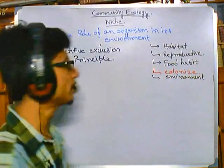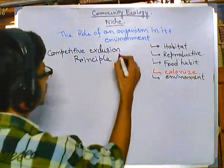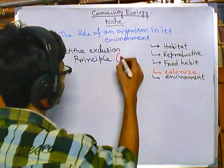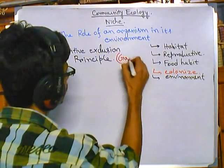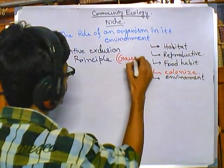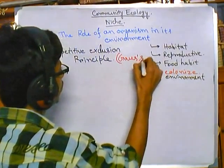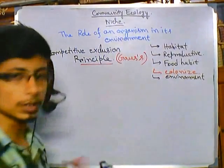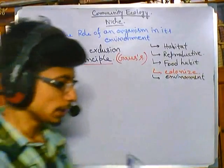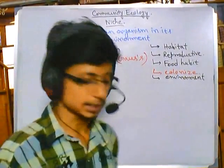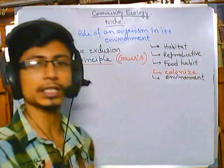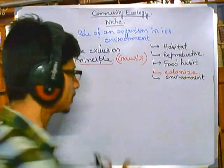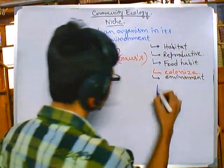This concept was provided by Gauss, who is a pioneer of community ecology. It is also called Gauss's principle. Gauss conducted many experiments with Paramecium.